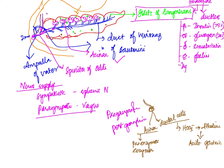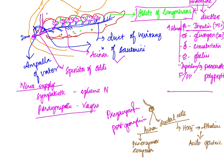There are also F cells, also known as PP cells, which produce pancreatic polypeptide. Insulin helps in the regulation of glucose — it takes up glucose from the blood. Glucagon, on the other hand, helps in increasing blood glucose.